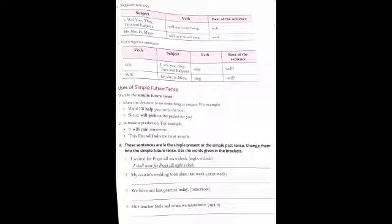Now, coming to an interrogative sentence — the question form of a sentence. Over here, we use the helping verb first, plus the subject, plus the main verb and the rest of the sentence. The helping verb in Simple Future Tense in an interrogative sentence is 'will', and with 'will' we add subjects: I, we, you, they, Tara and Kalpana, plus the main verb plus the rest of the sentence.